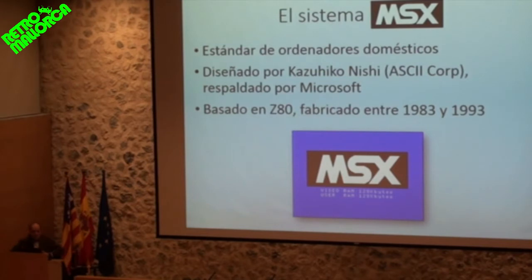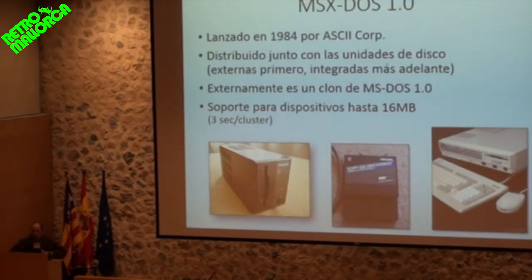Internally, MSX was based on the Z80 processor and was produced between 1983 and late 1993. By 1993 MSX was no longer available in Europe, but in Japan they were still being sold. The first MSX computers came without a disk drive — they had no disk unit or any storage system other than cassette tapes or cartridges. But in 1984, the first external disk units for MSX began to appear, distributed with MSX-DOS version 1.0.